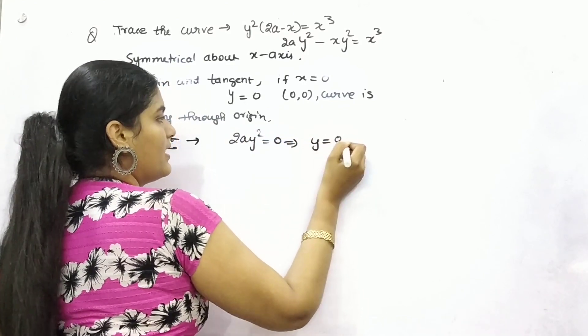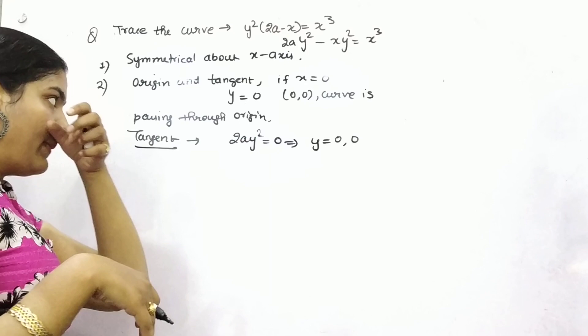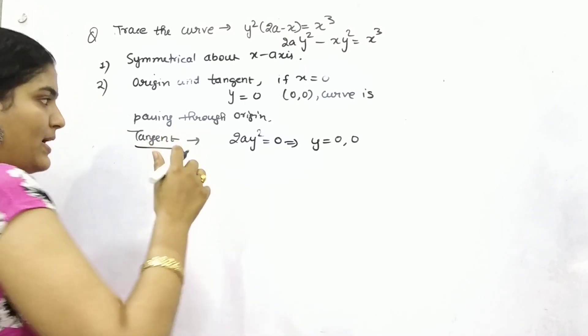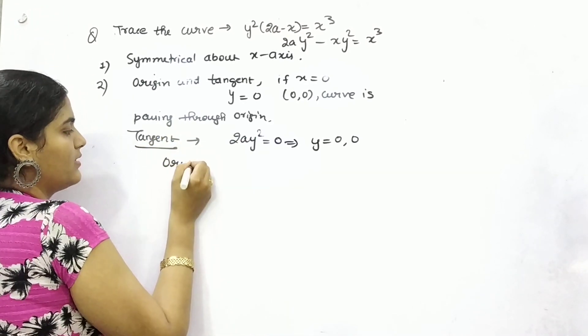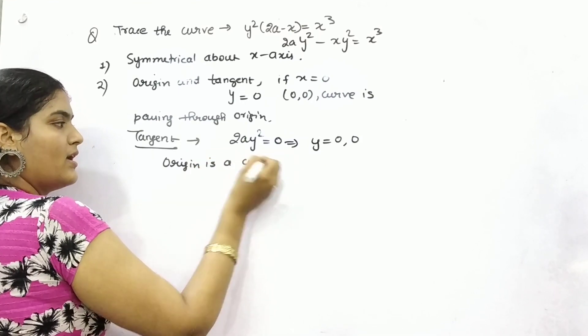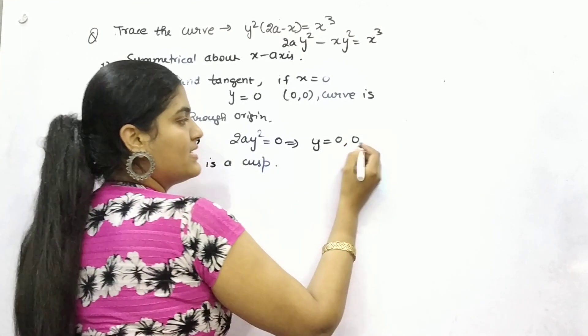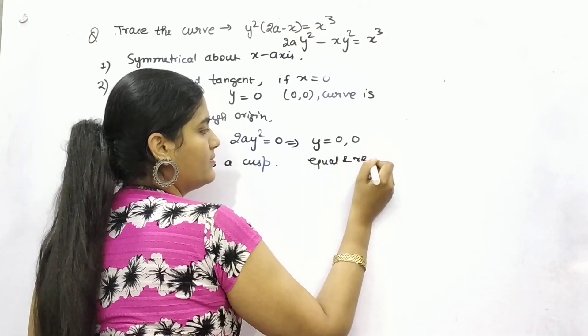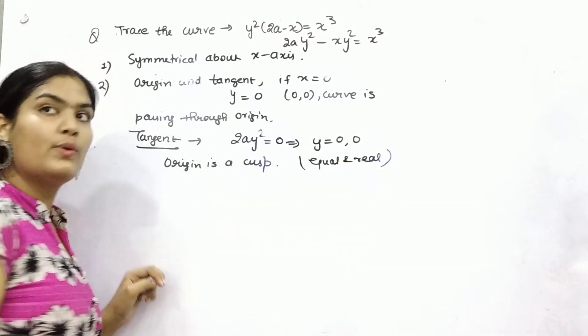That means y is also, means tangent is also passing through origin and origin is cusp. Why? Because these are equal and real values.